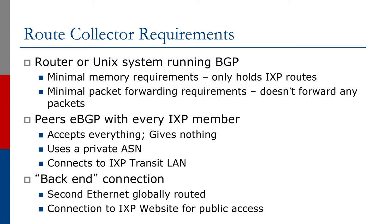It peers EBGP with every exchange point member, accepts everything, and gives nothing. It only needs a private AS number and connects to the exchange point transit LAN. There may also be a back-end connection — a second interface — that is globally routed and connects to the exchange point website for public access to the routing information it has collected.